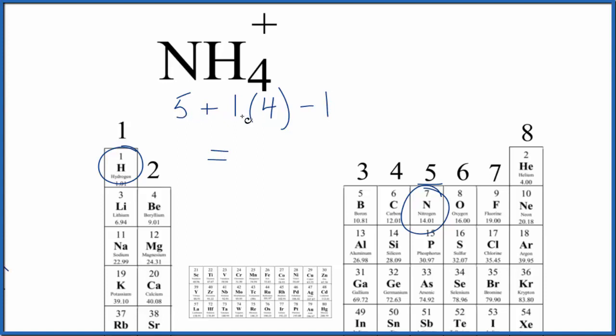So we have 5 plus 4, that's 9 minus 1, 8 total valence electrons for the NH4 Lewis structure. This is the ammonium ion.